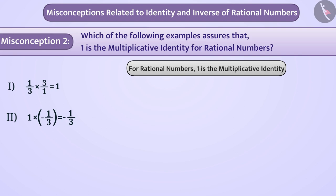Many students just memorize the concept of multiplicative identity. They do not understand its meaning. By looking at the first option, they think that here multiplication operation is performed and the answer obtained is 1. Therefore, this option is an example of multiplicative identity. For this reason, they give the answer as option 1, which is a wrong answer.